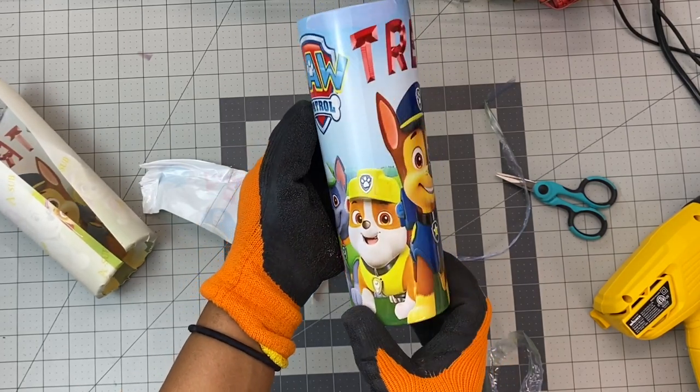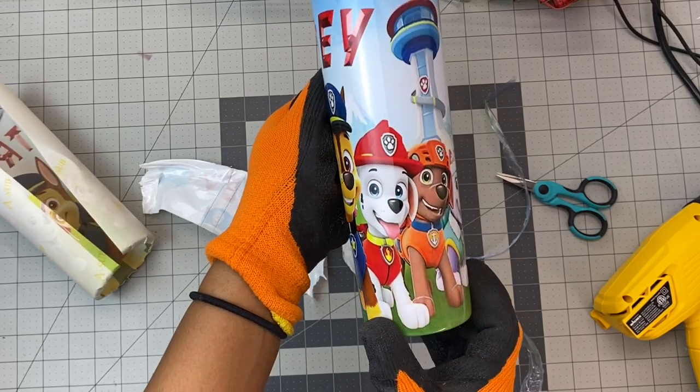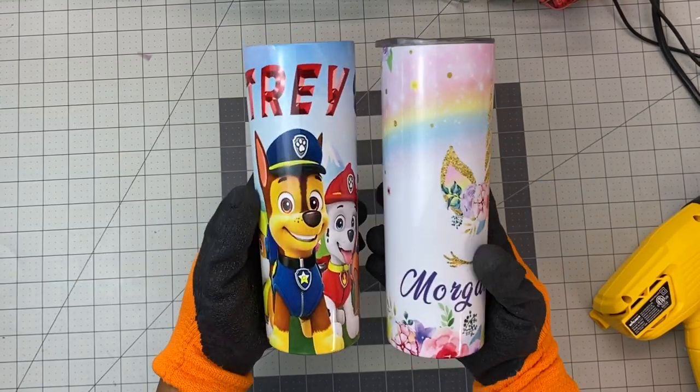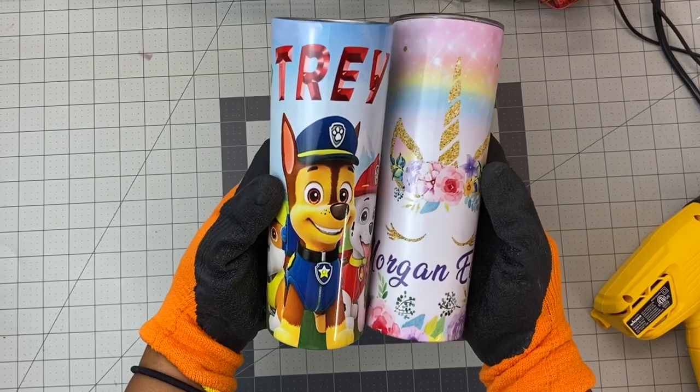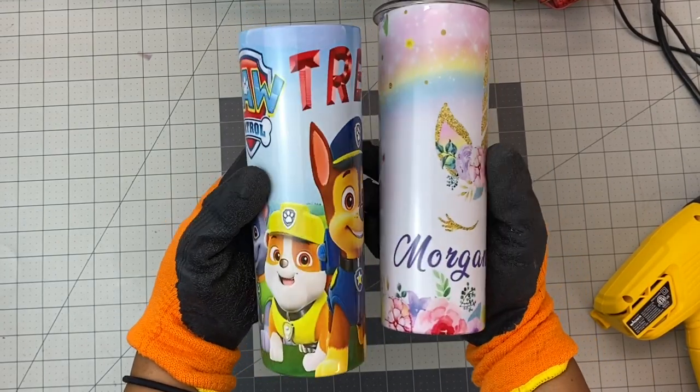So I guess the short and skinny of it all is I definitely recommend the shrink wrap. You use a lot less tape, and I think that you get a lot better, even sublimation for the all-over sublimation.